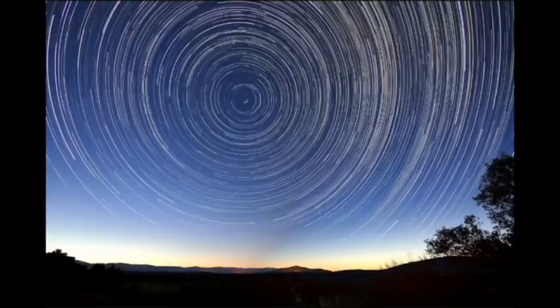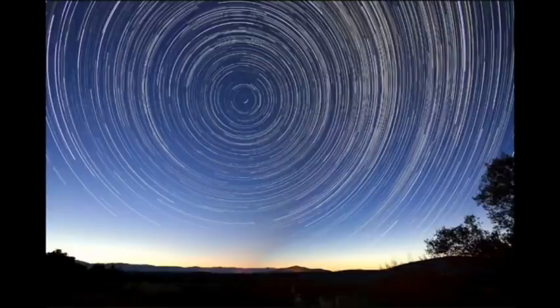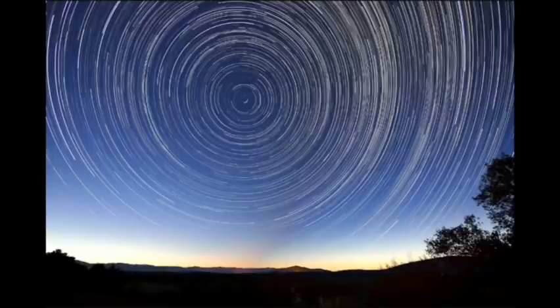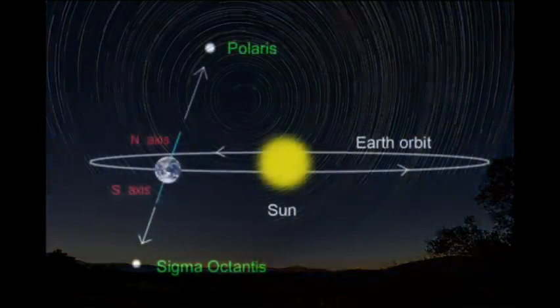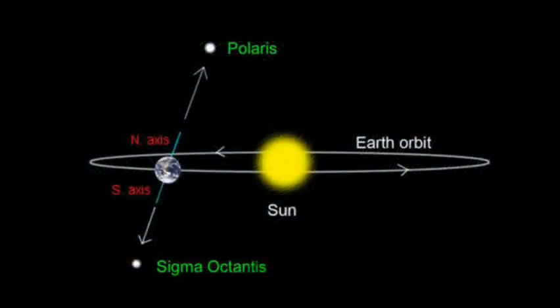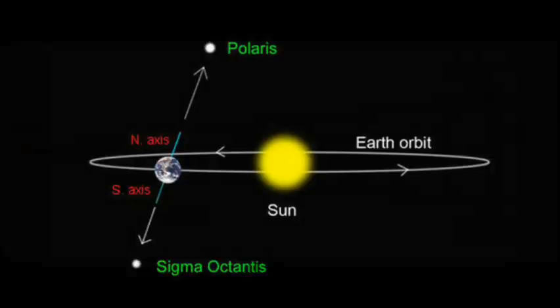Flat Earthers will often protest that it's impossible for Polaris to appear always above the North Pole, considering that Earth is traveling around the Sun at an orbital path of 940 million kilometers of circumference. This argument is irrelevant with respect to the shape of the Earth, and is merely a bad argument for a stationary Earth. Nonetheless, flat Earthers simply lack understanding of the geometry of the heliocentric model. The distance the Earth travels during its annual orbit is minuscule compared to the distance of Polaris.